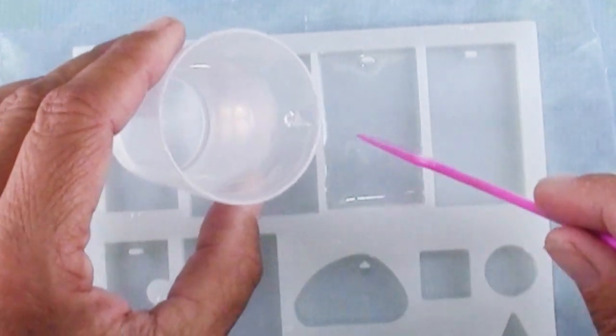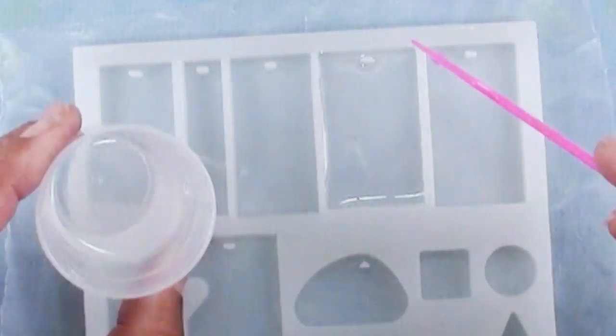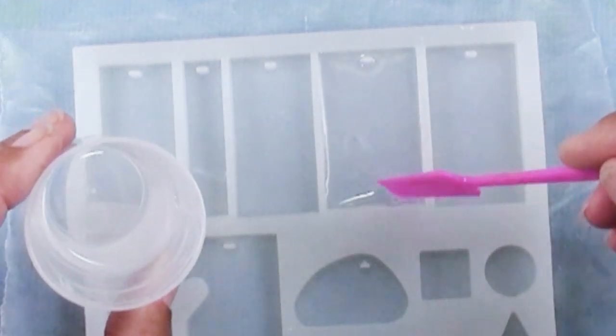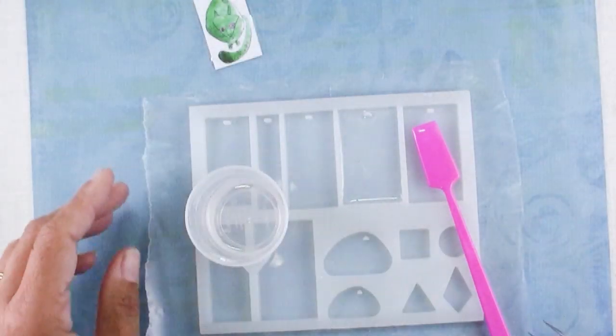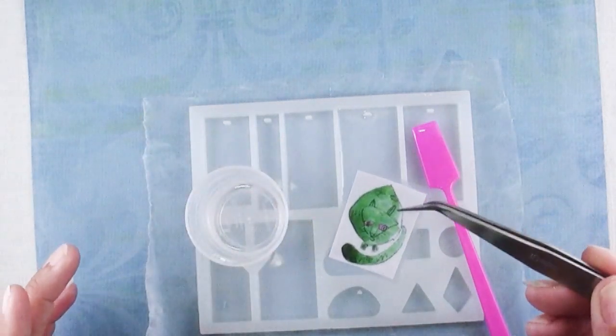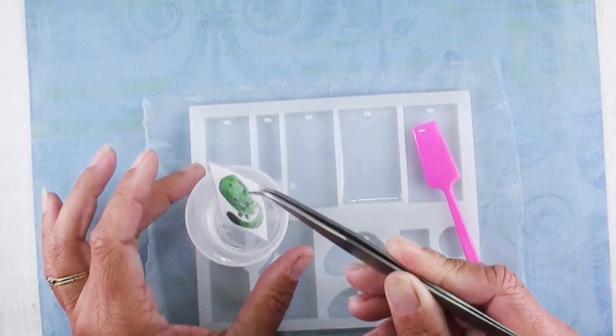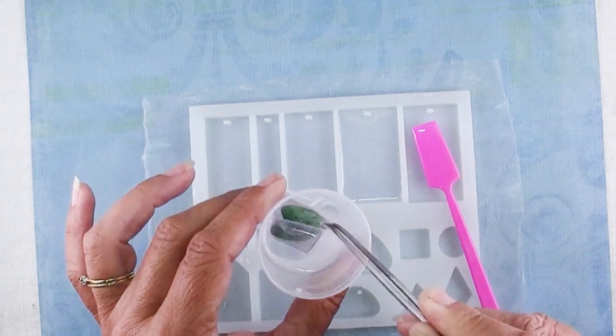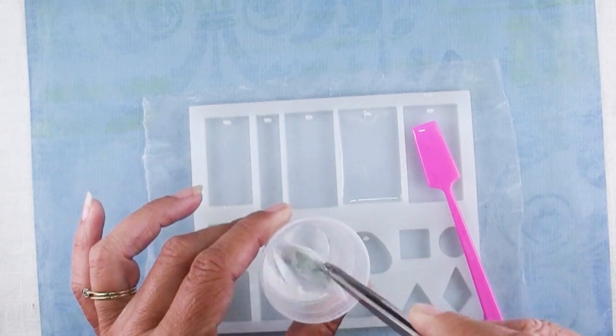I've really been very happy with this resin that it does not hold on to bubbles hardly at all. The next thing the instructions tell you to do is to take whatever it is that you're going to mold, in this case the piece of artwork, and dip it in the resin. A pair of tweezers is very handy for this.